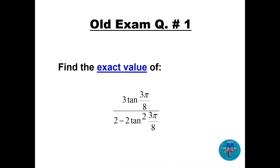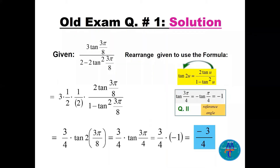Question number one: find the exact value of 3·tan(3π/8) divided by 2 minus 2·tan²(3π/8). It's very obvious that this expression is similar to tan of 2θ, so we have to make some arrangements until we get the formula. In the solution, first we write the formula of tan(2u) which is 2·tan(u) divided by 1 minus tan²(u).